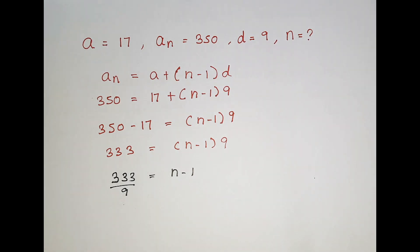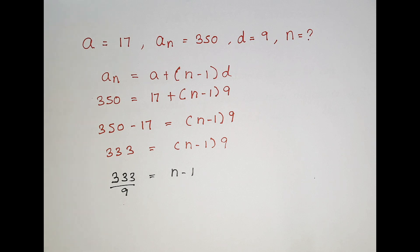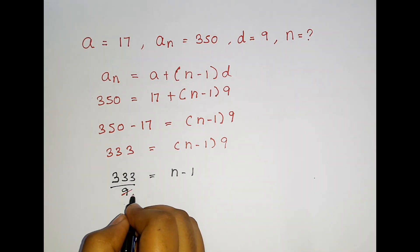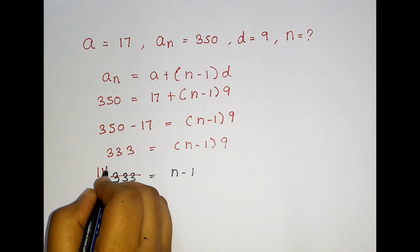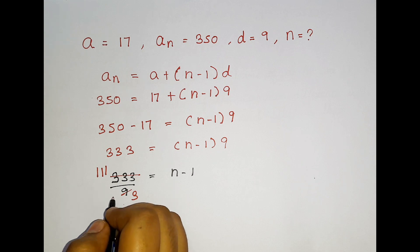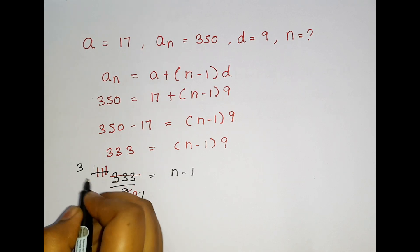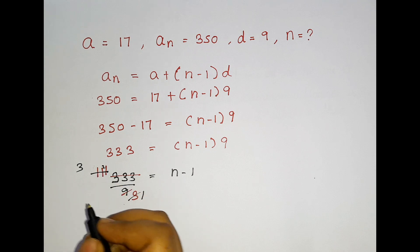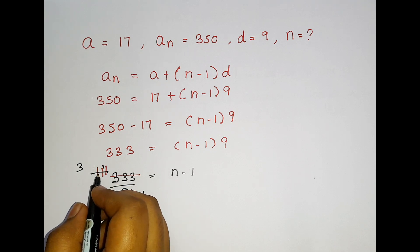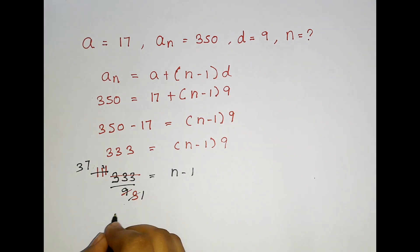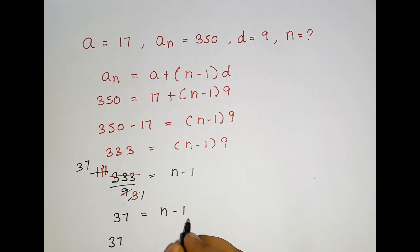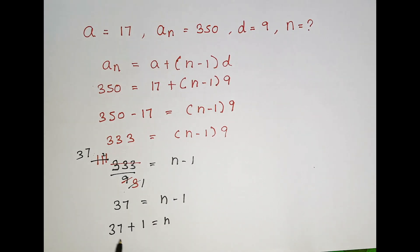Now we can cancel: 333 divided by 9. In the 3-times table: 3×3=9, 3×3=9, 3×3=9 — and again, 33÷9: 9×3=27, balance 6... working through: 333÷9 = 37. So 37 = N−1. Since it is minus 1, when it comes to the other side it changes to plus 1, so N = 37 + 1 = 38.